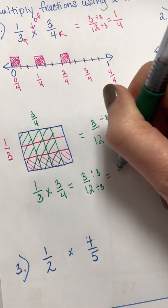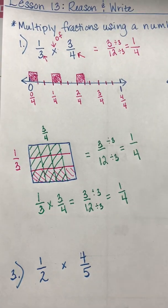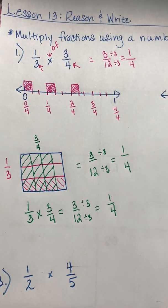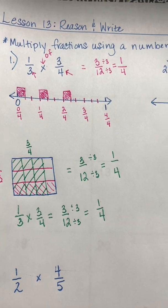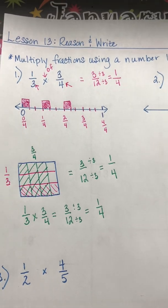If you work this mathematically with numbers alone, you would simply multiply the numerators — one times three is three — and then multiply the denominators — three times four is twelve. You would simplify three-twelfths as well, and you can see each method produces the same answer of one-fourth.